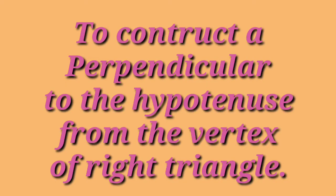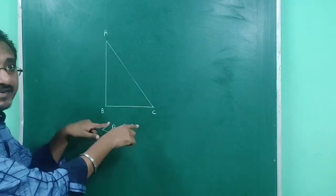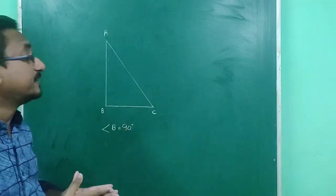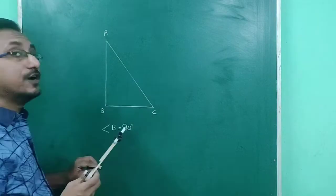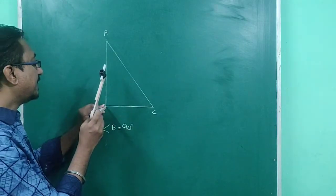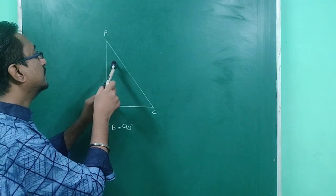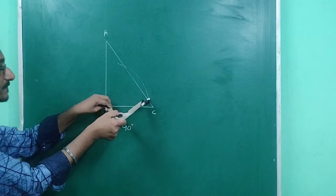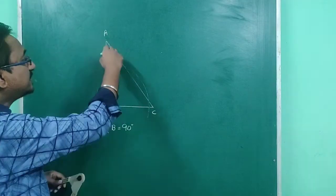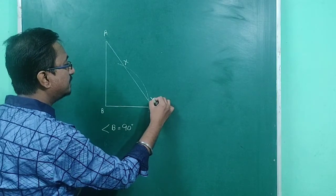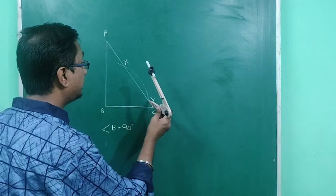Now let us construct a perpendicular from point B to the hypotenuse. This is a right angle triangle and this is the hypotenuse. First I will construct an arc taking center B and a convenient radius to cut the hypotenuse at two points X and Y.